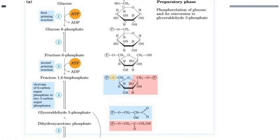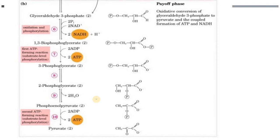Glucose, which is a 6-carbon compound, has been converted to a 3-carbon compound. Glyceraldehyde-3-phosphate enters the glycolysis pathway directly, but dihydroxyacetone phosphate is not suitable for glycolysis, so it has to undergo one more step of isomerization, carried out by triose phosphate isomerase.